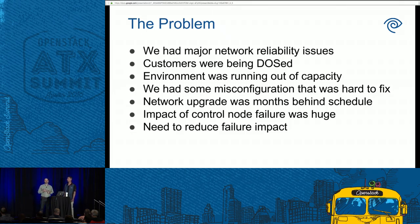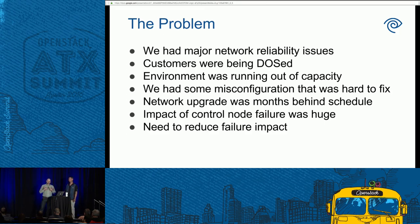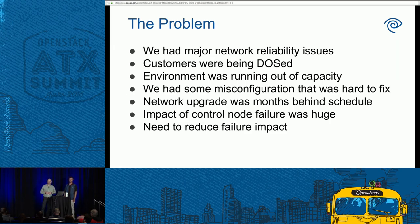The real issue we were running into is that when we had these capacity issues, our control nodes would get overloaded. Sometimes they would crash; sometimes they just became nonfunctional. This really highlighted a big problem: when these nodes go down, we'd lose networking for a third of our customers because the virtual routers were hosted there. Everybody has nodes fail — it's something everybody has to deal with — but the failure mode in this particular circumstance was really unacceptable.